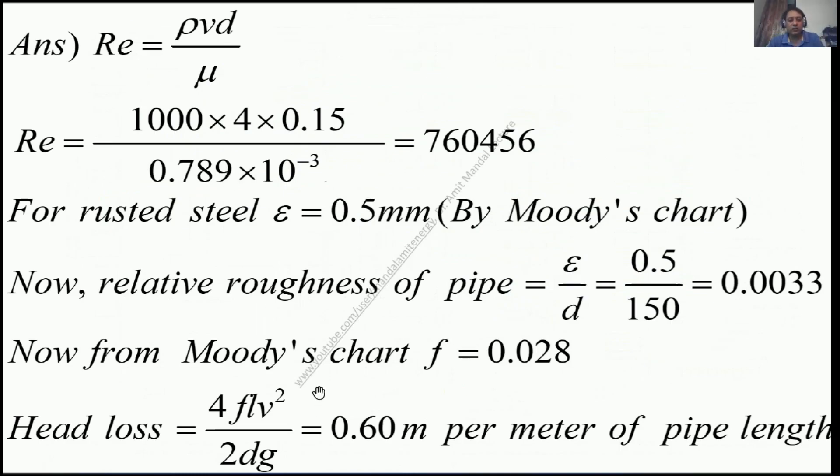Now we know that the head loss is given by hf = 4fLv²/2dg. f we have found is 0.028. Length of the pipe, we have to take 1 meter because we have to find the head loss per meter of pipe. v is 4 m/s, d is 0.15 m. Putting all the values, the head loss is found to be 0.60 m per meter of pipe length.